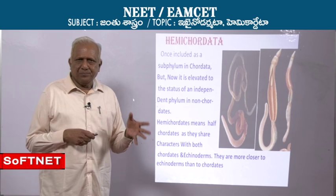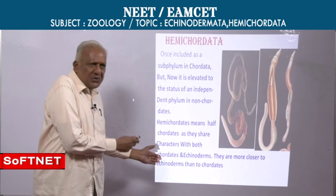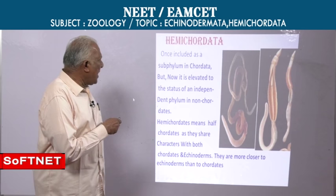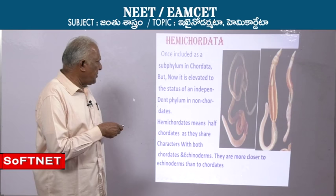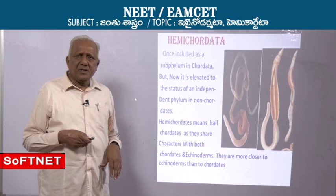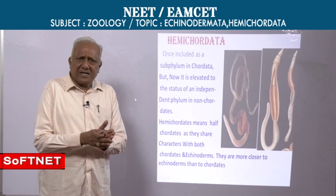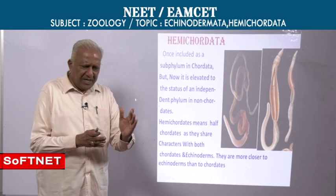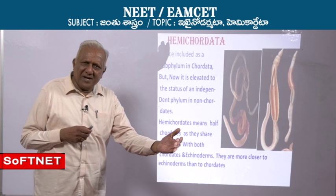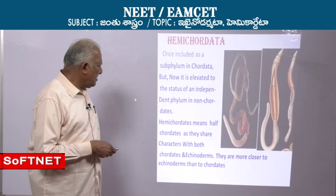Hemicordates means half-chordates. They share some characters with chordates and others with echinoderms. You have two examples: Balanoglossus, which is called acorn worm, and Saccoglossus. Generally, hemichordates are called acorn worms, but Balanoglossus is specifically also called tongue worm because of its tongue-like proboscis.